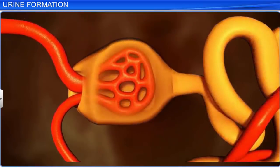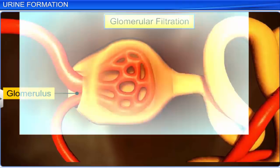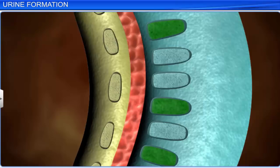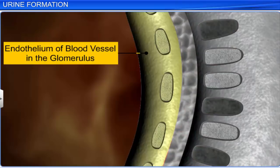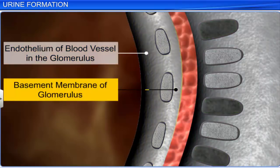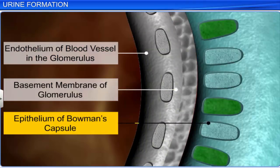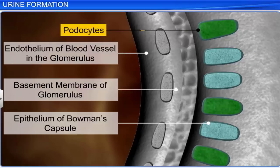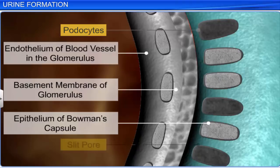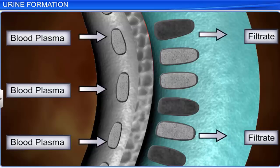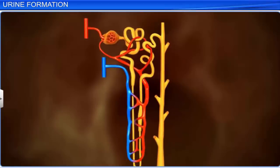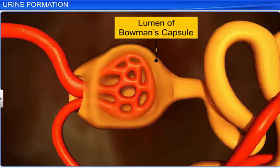The first step in urine formation is the filtration of blood, which takes place in the glomerulus, hence the name glomerular filtration. The pressure of blood in the glomerular capillaries forces the blood to pass through three layers: the endothelium of the blood vessel or capillary, the basement membrane of the glomerulus, and the epithelium of Bowman's capsule. The epithelial cells in Bowman's capsule, also known as podocytes, are intricately arranged, leaving a few minute openings called slit pores or filtration slits. These slits help in the filtration of blood, and almost all the constituents of the plasma, except the proteins, pass into the lumen of Bowman's capsule — the reason why glomerular filtration is known as ultrafiltration.